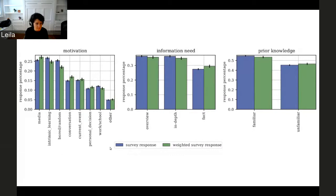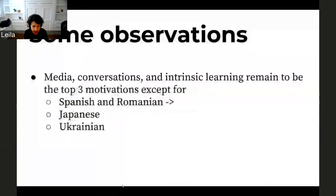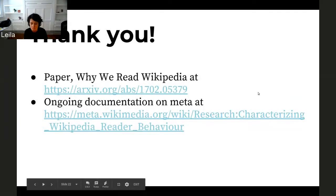And I have some write-up here just to say that media, conversations, and intrinsic learning seem to be the main motivations, the top three motivations for people coming to Wikipedia across the languages that we looked at. There are some differences where Spanish and Romanian, it seems work and school-related projects substitute one of the three top motivations. In Japanese, bored and random exploration does that. And in Ukrainian, events basically replace one of the top three motivations. But overall, it is interesting to see that these 14 languages are not so different from each other in terms of the motivations, except for the few that we need to understand better. And I think that's all on our end. Yeah, I'll stop here.